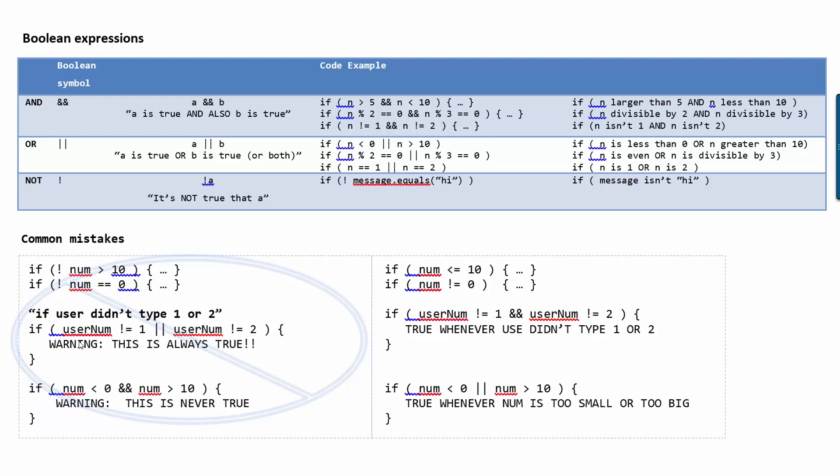Here is a bug or here's a common mistake to make. Let's say that you want to test if the user didn't type 1 or 2. You might see that or in your English statement and say, well, let's test if user num not 1 or user num not 2. The problem is that this is always true.